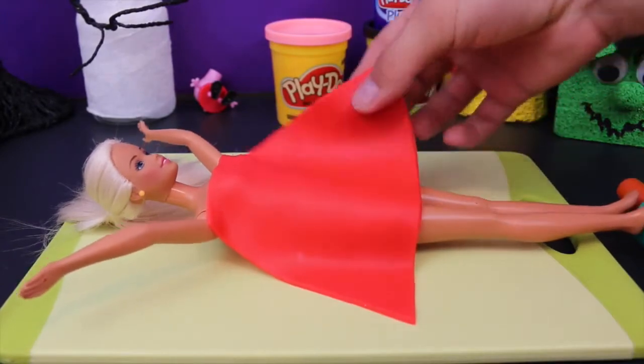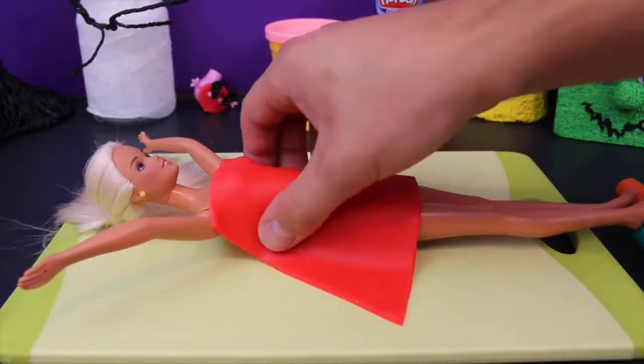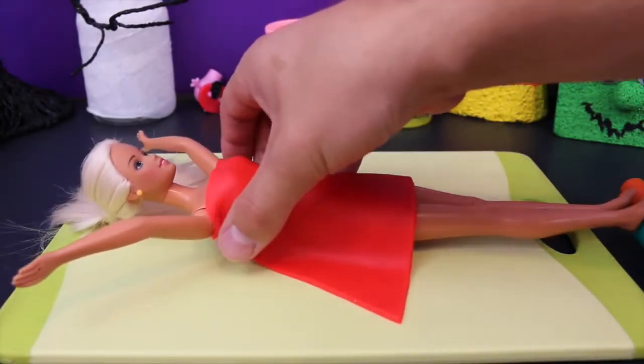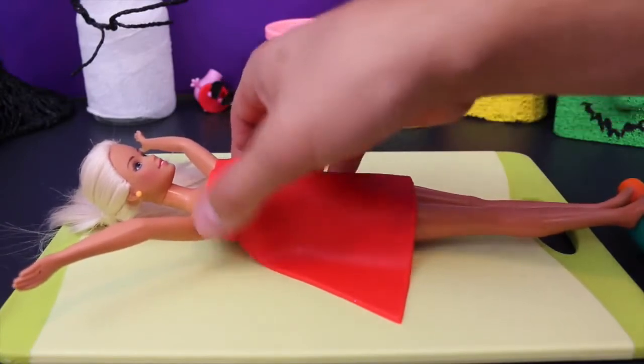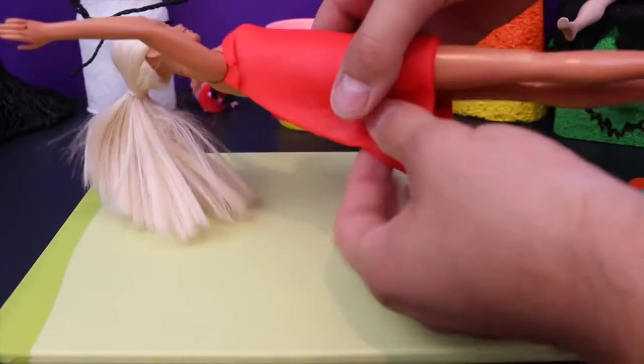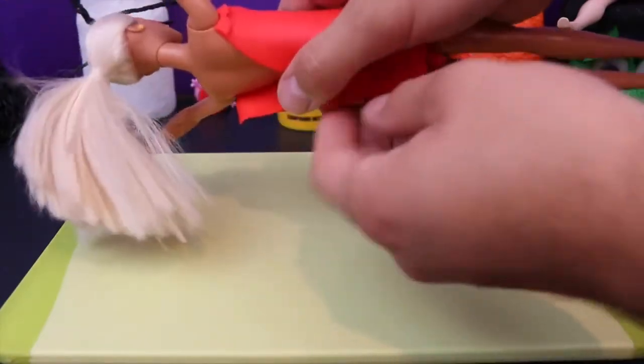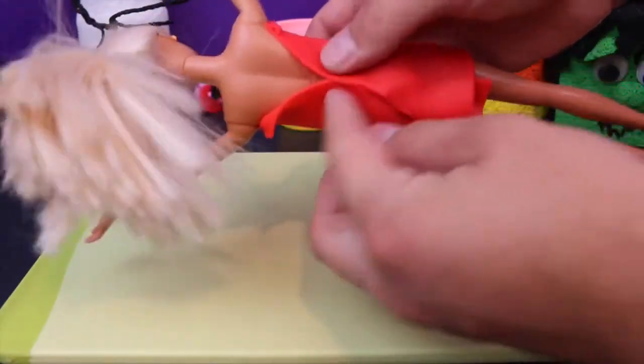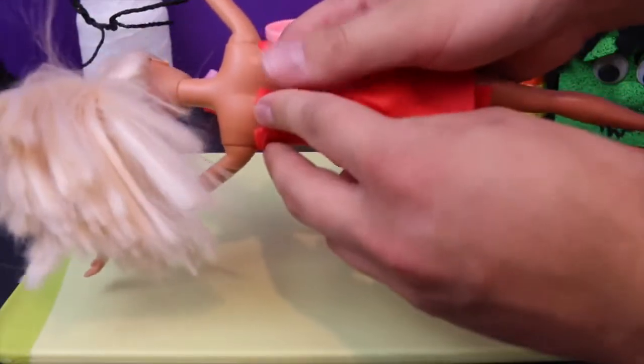And what I've done now is I took the sheet of Play-Doh and I just laid it on top of Miss Barbie here and what we're gonna do is kind of just lightly mold the Play-Doh to her body so that it sticks on nicely and on the back I'm just gonna seal the two ends together and just kind of mold those all up so it becomes nice one uniform dress.